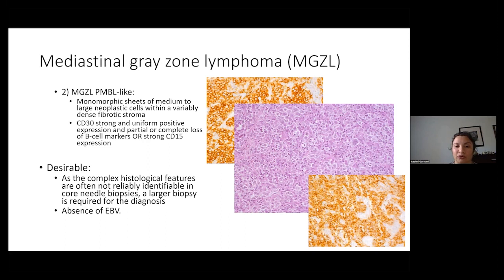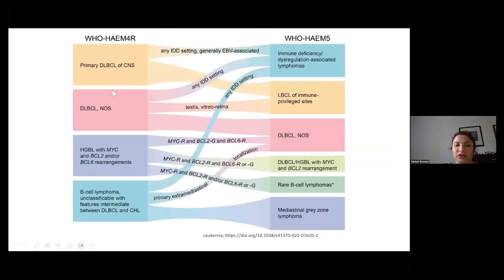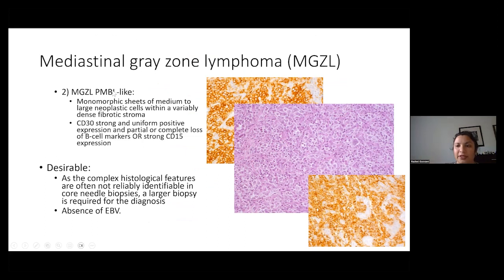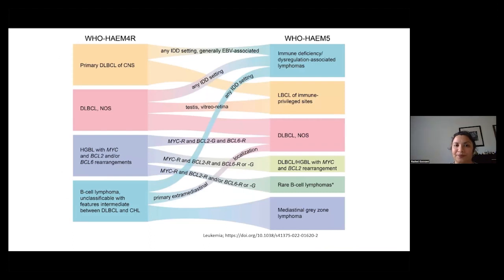For the diagnosis of mediastinal gray zone lymphoma, it's best not to do it on small biopsies because you do need to see the topography of this lymphoma, and there must also be absence of EBV. That basically concludes the changes in the large cell lymphoma section. I also wanted to touch on the new classification of immunodeficiency and dysregulated lymphoproliferative disorders.